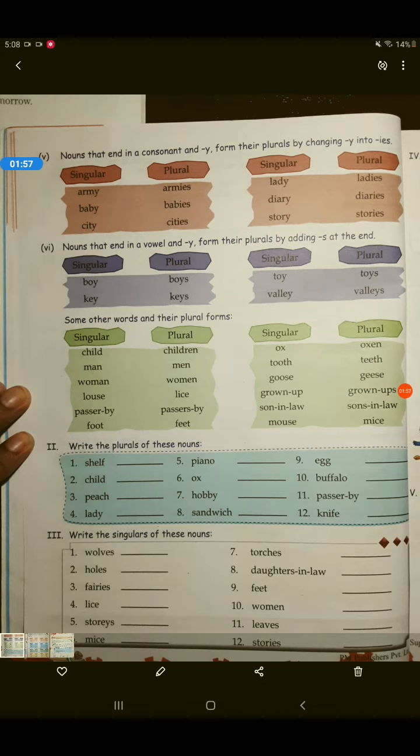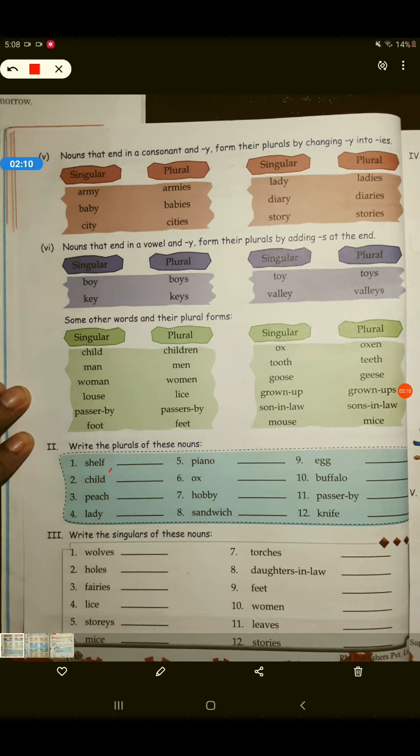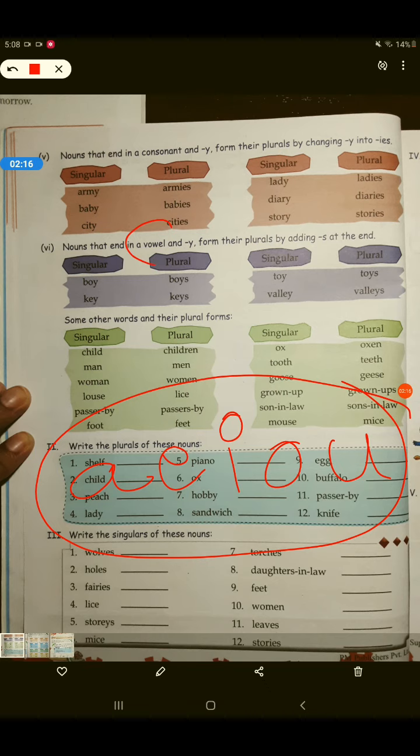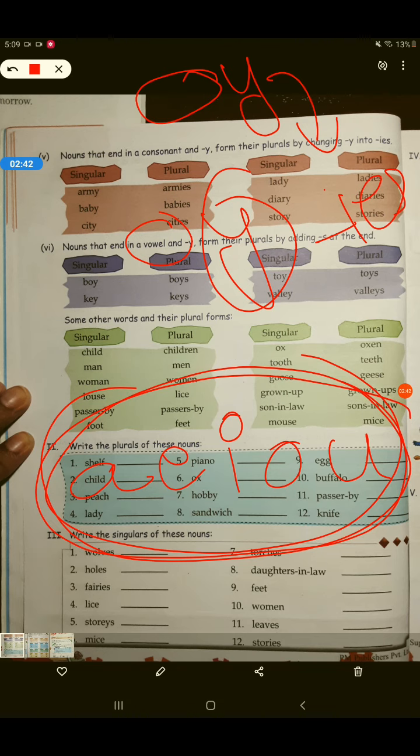Nouns that end in consonant and Y form their plurals by changing Y into I-E-S. Consonant, मतलब? Children, A-E-I-O-U, इनको हम कहते हैं, vowels, V-O-W-E-L-S. इसके अलावा, जो English letters होते हैं, वो सारे के सारे consonant होते हैं. तो अगर हम देखेंगे कि एक consonant है, उसके बाद Y है, तो उसका हम plural बनाते time, Y को हटा देंगे और उसकी जगह I-E-S लगा देंगे.